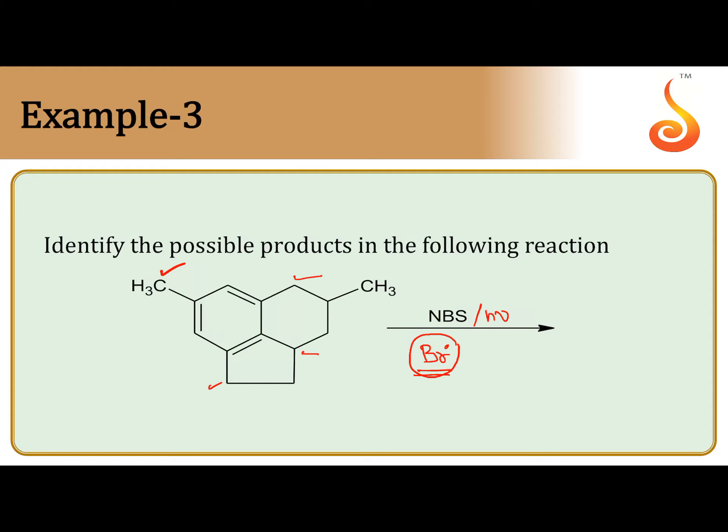So first you write those four free radicals and attach bromine at those. First attach bromine to this carbon, CH2Br. Attach bromine here, attach bromine here, and attach bromine here.